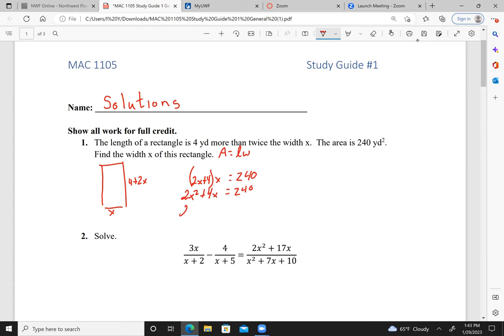Bring the 240 over: 2x squared plus 4x minus 240 equals zero. I would go ahead and divide through by 2 to get x squared plus 2x minus 120 equals zero.